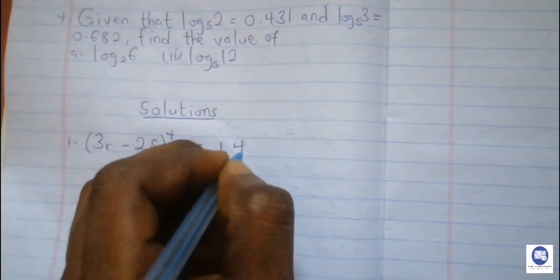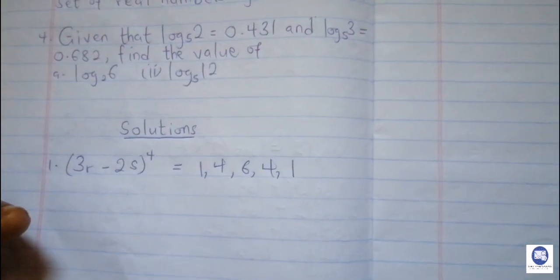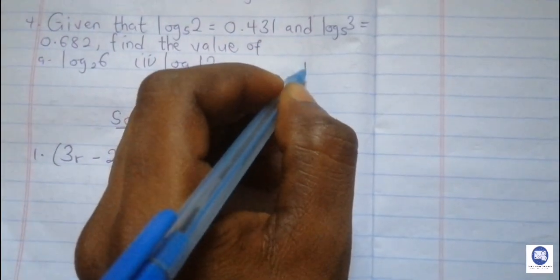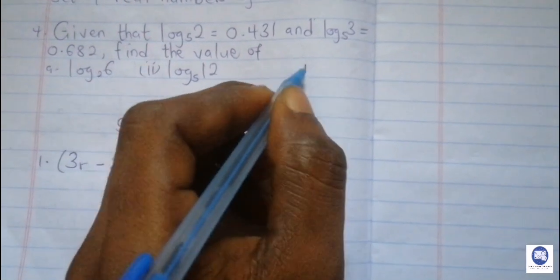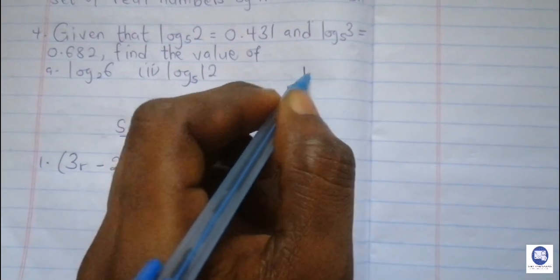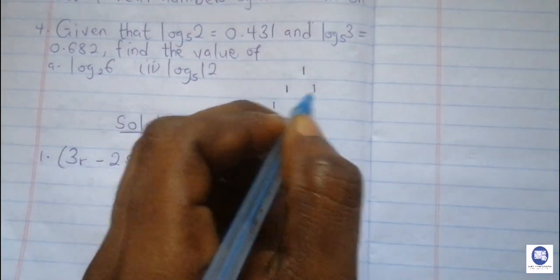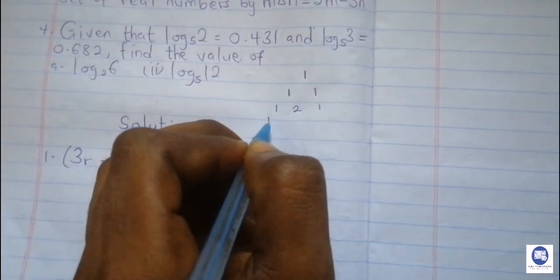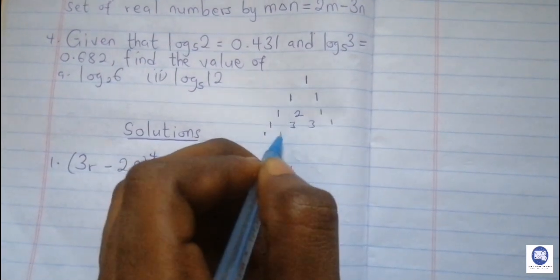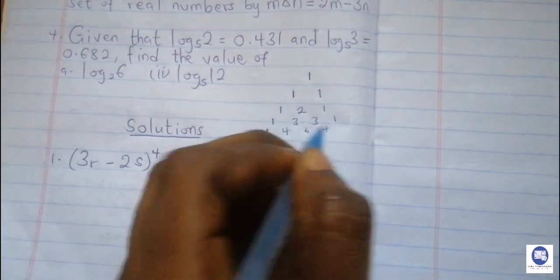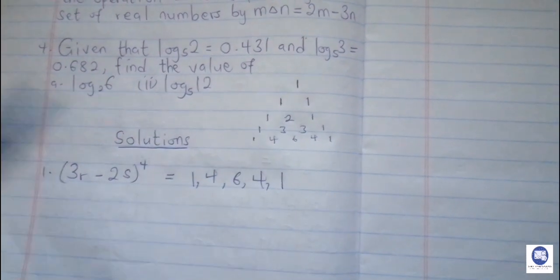The coefficients are 1, 4, 6, 4, and 1. We use the Pascal triangle to get these. Starting with 1, then 1 plus 0 is 1, giving row 1, 1. Then 1 plus 1 is 2, giving 1, 2, 1. Then 1, 3, 3, 1. Then 1 plus 3 is 4, 3 plus 3 is 6, 3 plus 1 is 4, giving us 1, 4, 6, 4, 1. You see it's forming something like a triangle — we call this the Pascal triangle.